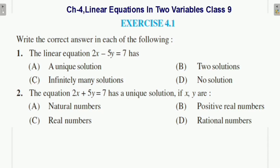So this is correct. Students, now see Exercise 4.1 sample questions, Chapter 4 Linear Equations in Two Variables Class 9. The first question: 2x − 5y = 7. Students, this will have infinitely many solutions because if we take different values of x, we get different values of y.